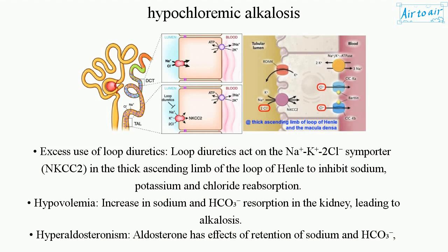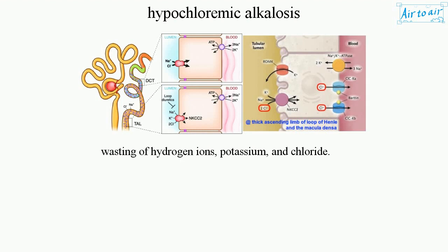Loop diuretics inhibit sodium, potassium, and chloride reabsorption. Hypovolemia causes an increase in sodium and HCO₃⁻ resorption in the kidney, leading to alkalosis. Hyperaldosteronism also contributes, as aldosterone causes retention of sodium and HCO₃⁻, and wasting of hydrogen ions, potassium, and chloride.